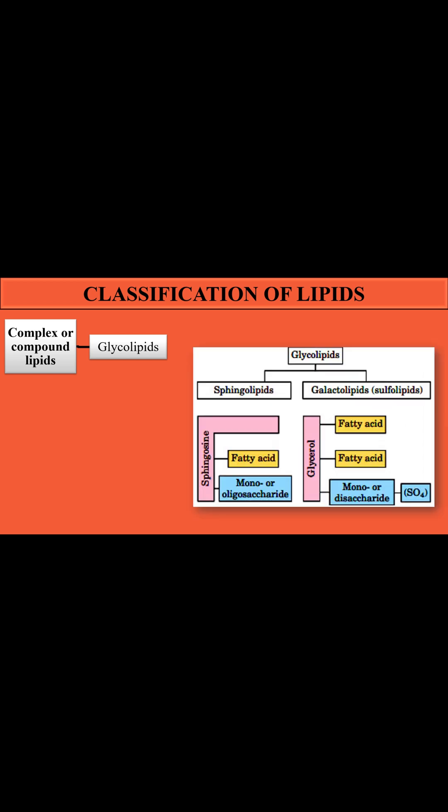The classification of glycolipids is similar to the classification of phospholipids seen earlier. They are classified into two groups on the basis of the alcohol used. If the alcohol is sphingosine, it is known as sphingolipids. If the alcohol group is glycerol, it is known as galactolipids. So glycolipids are divided into two groups — sphingolipids and galactolipids — based on the type of alcohol attached.